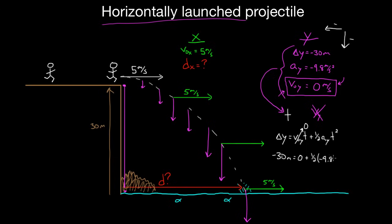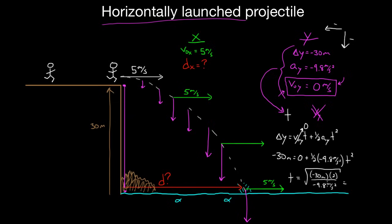The acceleration is negative 9.8 meters per second squared times t-squared. Solving for t: multiply both sides by two, then divide both sides by negative 9.8. Note that if you forgot the negative on the 30, you'd end up trying to take the square root of a negative number and your calculator would give an error. So plug in your negatives correctly and things will work out. Solving this gives a time of 2.47 seconds. Two and a half seconds of free fall is actually a long time.